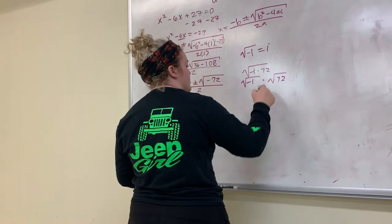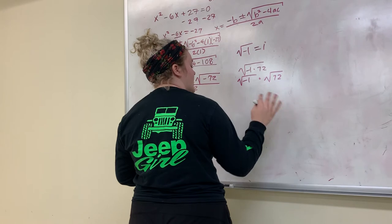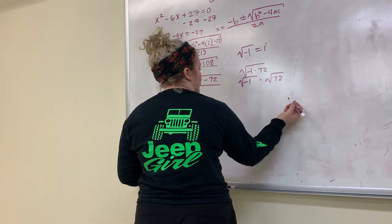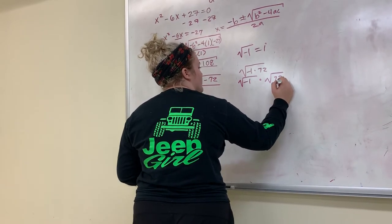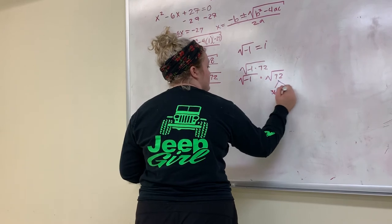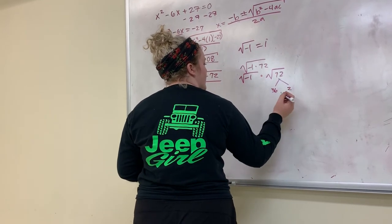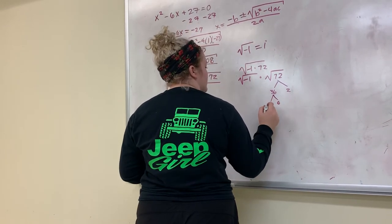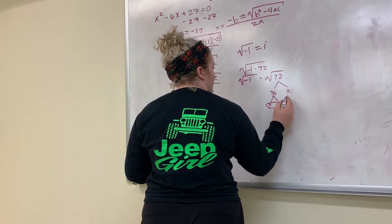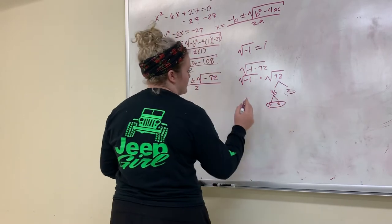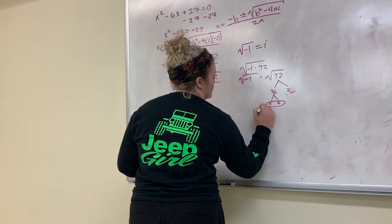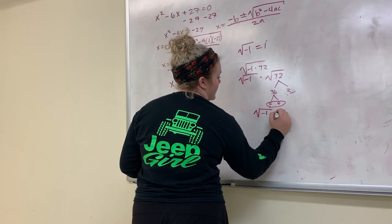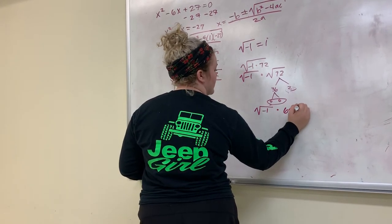Next step would be solving if this can go any smaller of a number. To do this, I'm going to be using factoring. So I'm going to be doing 36 times 2, and then 36 can be done by 6 times 6. So then once we have that pair, this would turn into square root of negative 1 times 6 square root of 2.